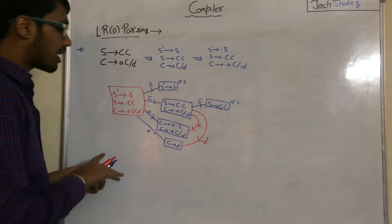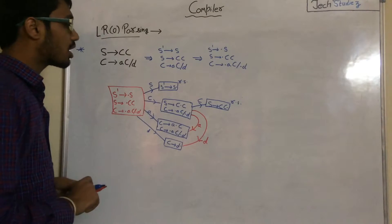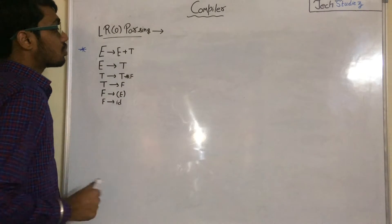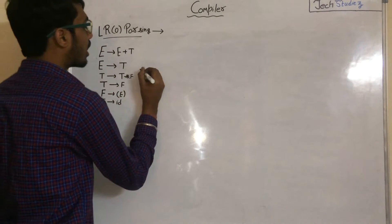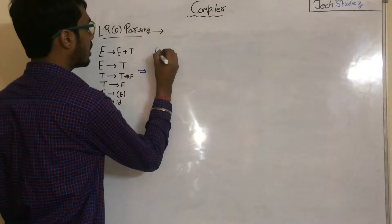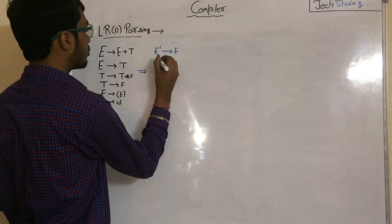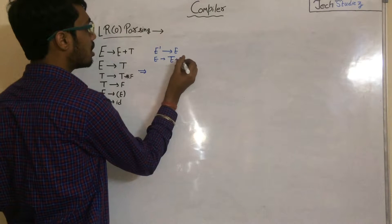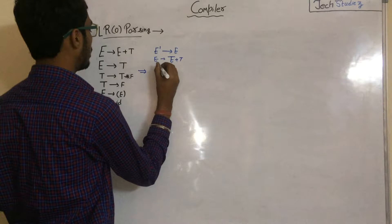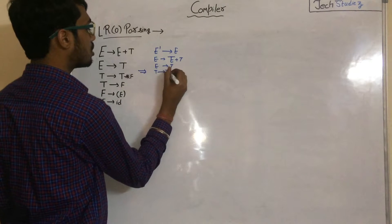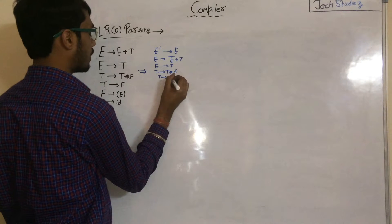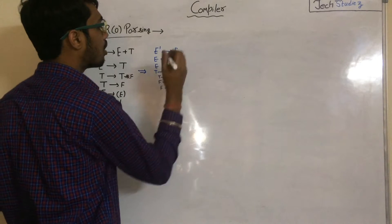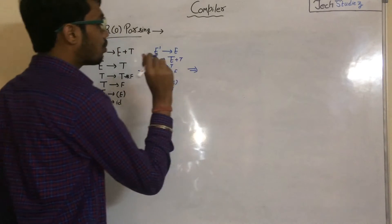Now let's take another example. For LR0 parsing we add one more production: E' to E. The productions become E' to E, E to E plus T, E to T, T to T star F, T to F, F to (E), and F to id.